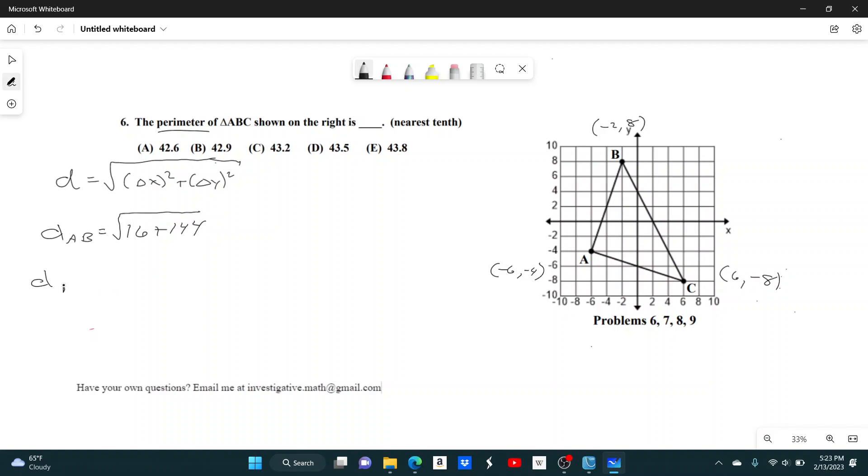My distance from B to C then, my change in x is from negative 2 to 6, so that's 8 squared is 64. My change in y from 8 to negative 8 is 16 squared is 256.